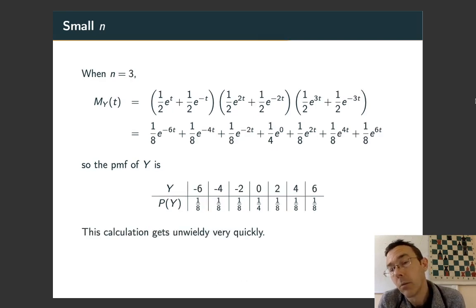For n equals 3, now we're multiplying three things. The moment generating functions for YI for I equals 1, 2 and 3. And you foil this out and you get possible Y values of negative 6, negative 4, negative 2, 0, 2, 4 and 6. Hey, notice that those possible Y values are all going in increments of 2. And that's always going to be the case. Already we can see this calculation getting kind of ugly. So, we want to find some shortcuts.